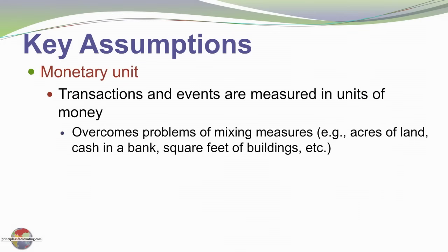Another assumption that we make — very subtle but very important — is the monetary unit assumption. We assume that we can measure and report things in money. For example, an area of land, we might express it as square meters or acres or square feet. Those are measurements of quantities of land, but for financial reporting, we express those amounts in dollars, typically the amount paid in a purchase price in an arm's length transaction, although there are other values that might be ascribed to certain assets.